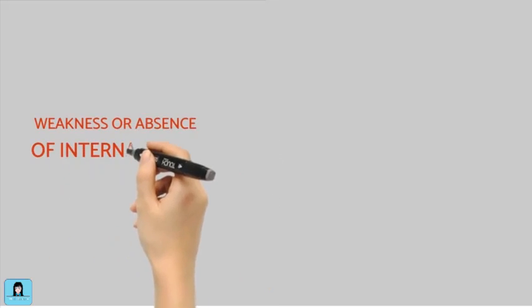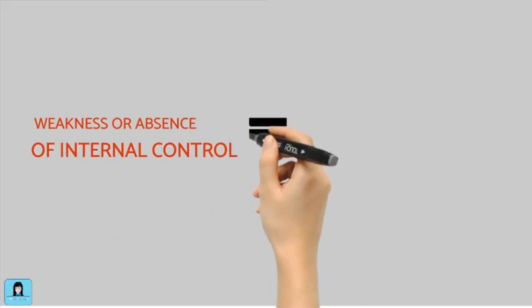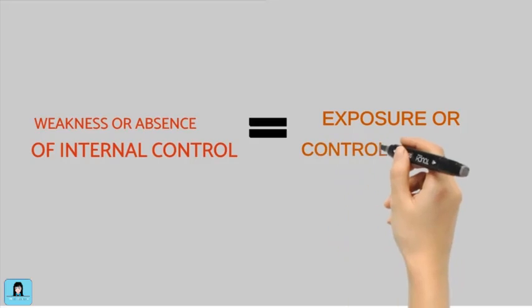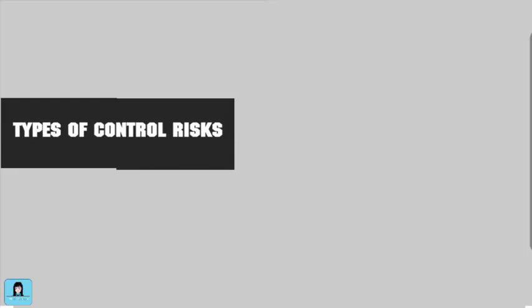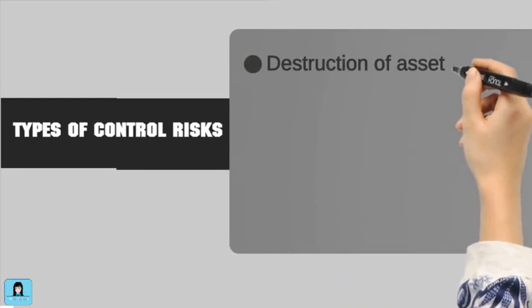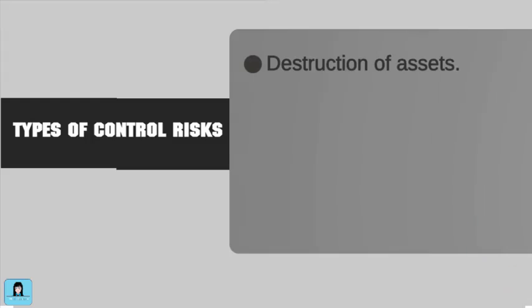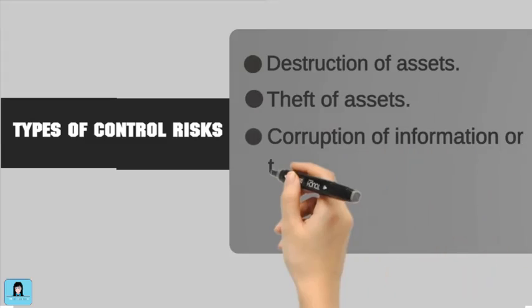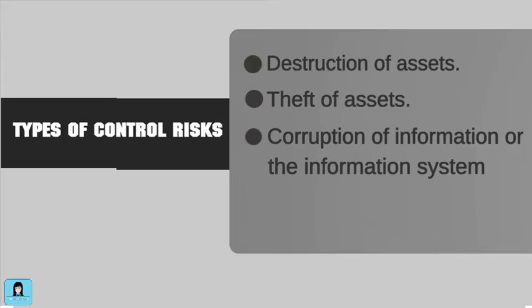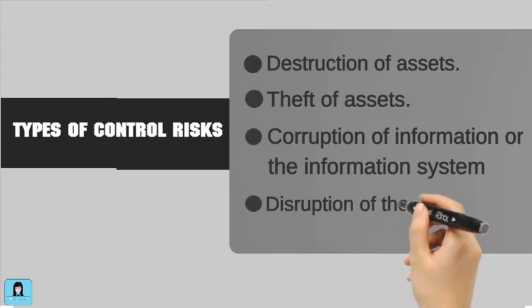The absence or weakness of control is called an exposure or control deficiency. A weakness in internal control may expose the company to one or more of the following types of risks. First, destruction of assets, both physical assets and information. Second, theft of assets. Third, corruption of information or the information system itself. And fourth, destruction of the information system.